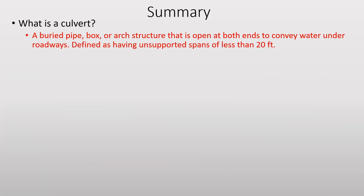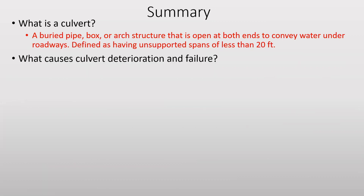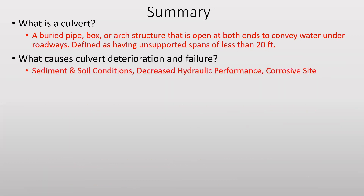In summary, we first defined what is a culvert: they are buried pipe, box, or arch structures that are open at both ends and convey water under a roadway, defined as having unsupported spans of less than 20 feet. What causes culvert deterioration and failure? The common factors include scour created by sediment and soil conditions, decreased hydraulic performance if the culvert begins to cave in or close up, or corrosive site conditions.